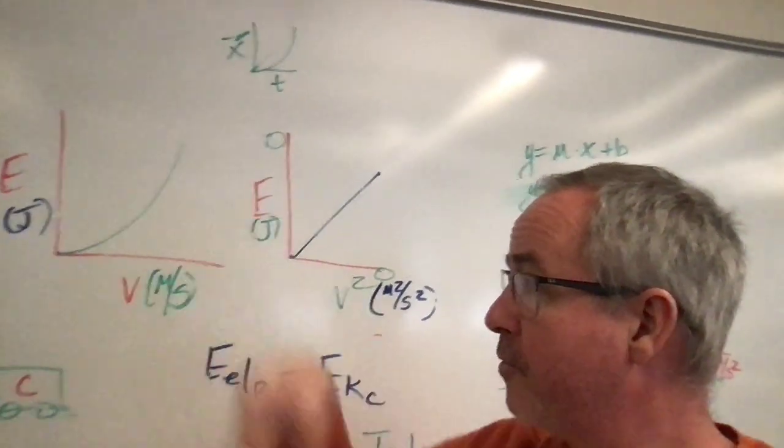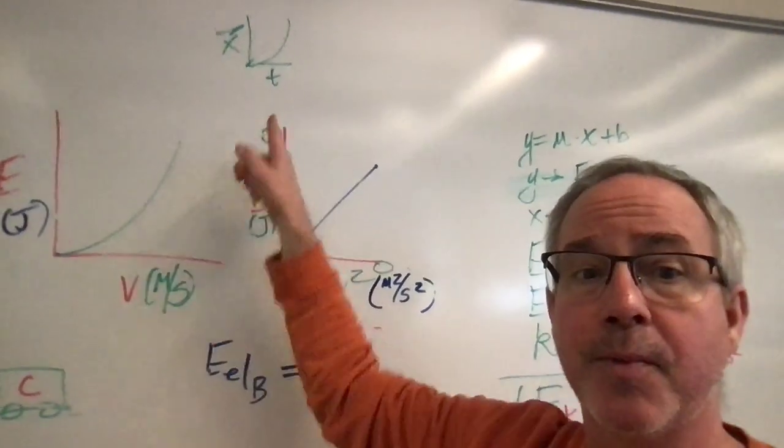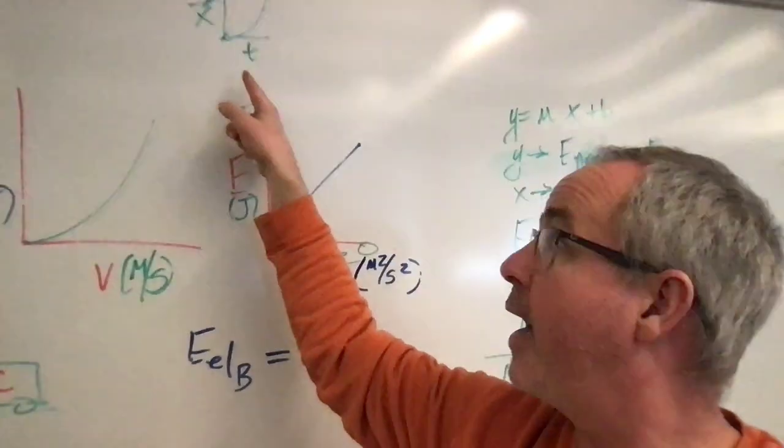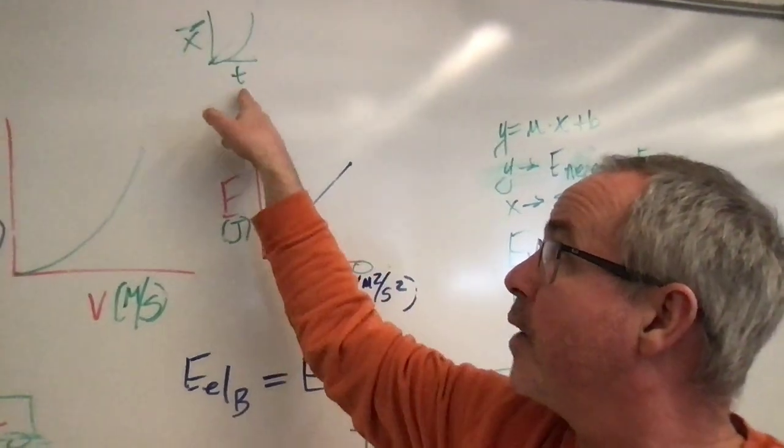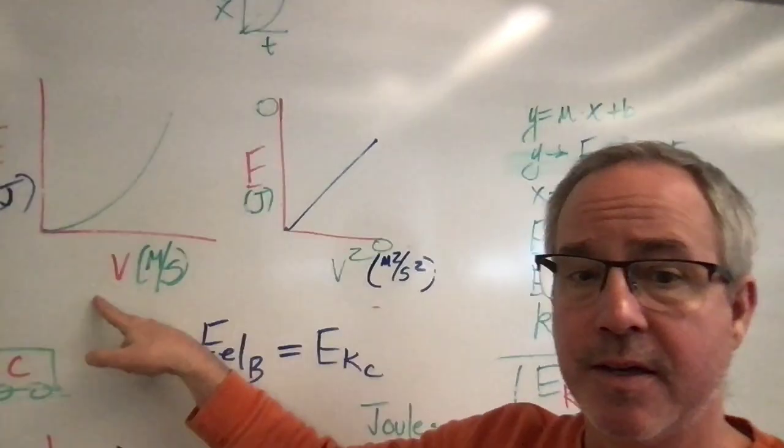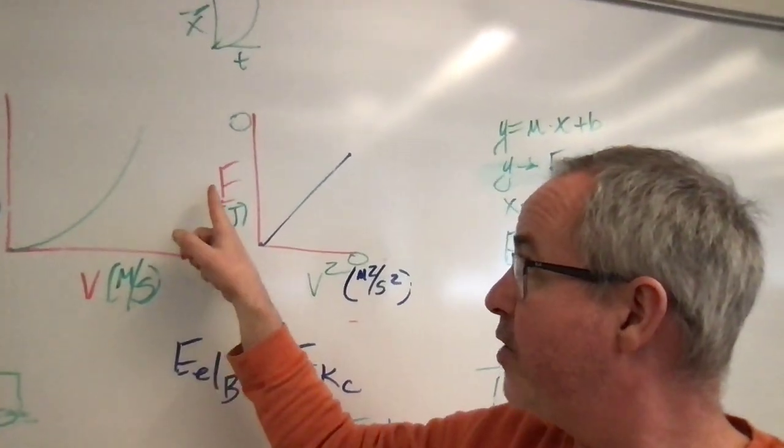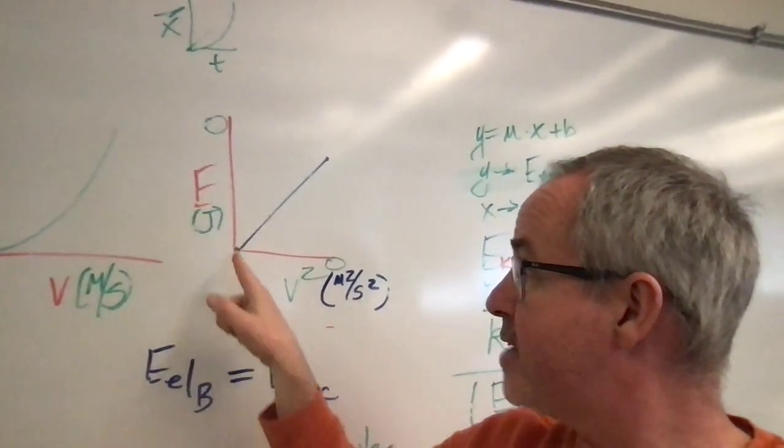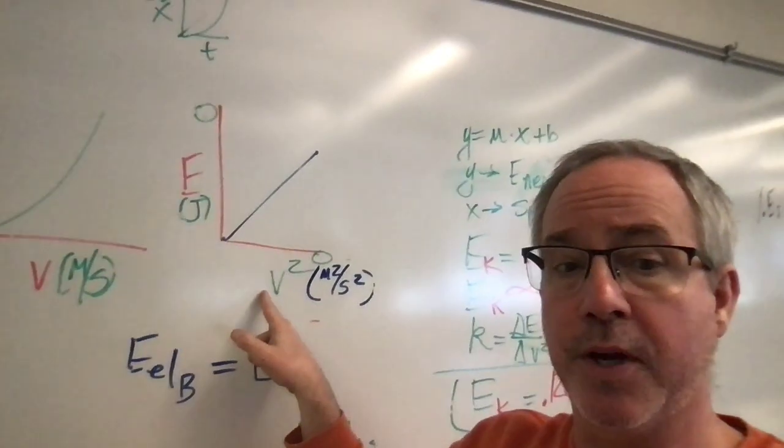We've had top open curves before like our position versus time graph from our wheel and axle lab, so like that we ended up squaring the thing on the x-axis which would have been the speed, and so students yesterday during class or last night for homework made an elastic energy versus speed squared graph.